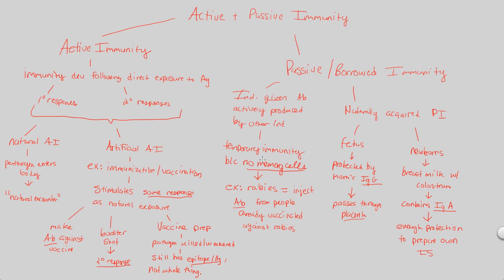That covers our look at immunity. This is really what we take for granted, because it's constantly working within us. We may not necessarily know how much and how actively it's working, but it's a critical part of survival as a human being and as an organism. Hopefully you've gained a greater appreciation for this wonderful system and understand that immunity — specifically adaptive immunity — is all about specificity.